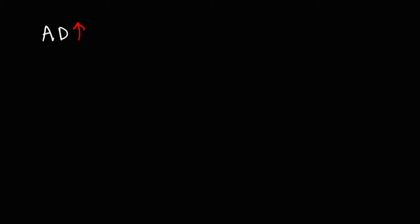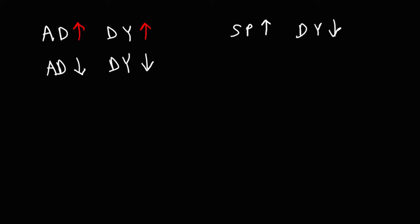Now let's talk about the relationship between the annual dividend and the dividend yield. I'm going to write AD to represent the annual dividend. As the annual dividend goes up, the dividend yield also goes up — so there's a direct relationship between the two. As the annual dividend goes down, the dividend yield also decreases. Now, the relationship between the stock price and the dividend yield is an inverse relationship. As the price of the stock increases, the dividend yield decreases. As the price decreases, the dividend yield increases.